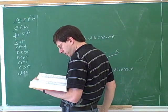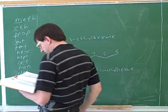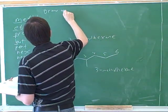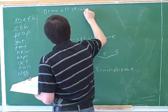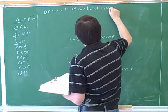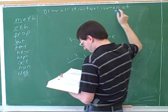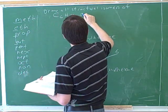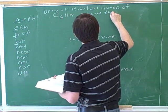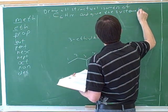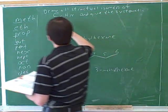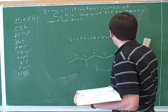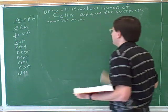Let's try this. Draw the structural isomers for the alkane C6H14 and give the systematic name for each one. Draw all structural isomers of C6H14, and give the systematic name for each. Let's try to attack this problem using the techniques we talked about earlier.